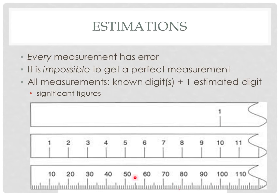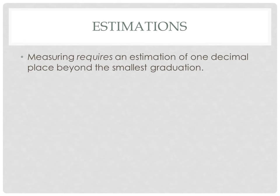The bottom ruler is marked every whole millimeter, where we have ten, eleven, twelve, thirteen, fourteen, et cetera, and we'd be able to record to the tenth of a millimeter because we can estimate that next digit. Whenever we measure, it requires an estimation of one decimal place beyond the smallest graduation. It's not something we do optionally if it's convenient — that's how measurements work.